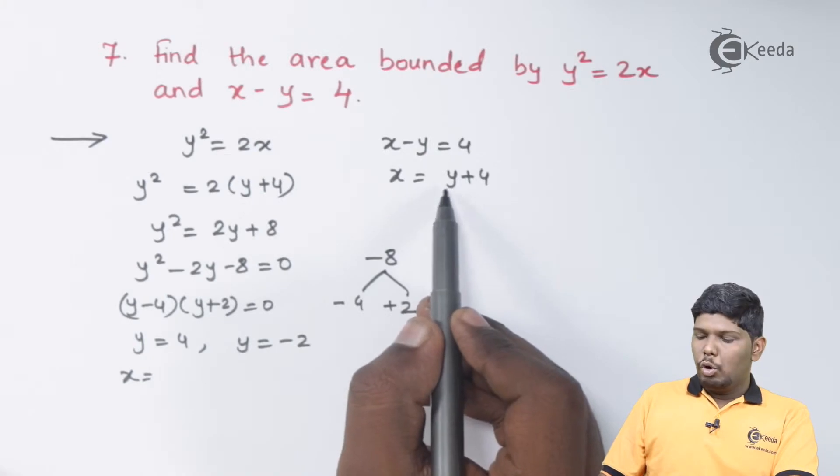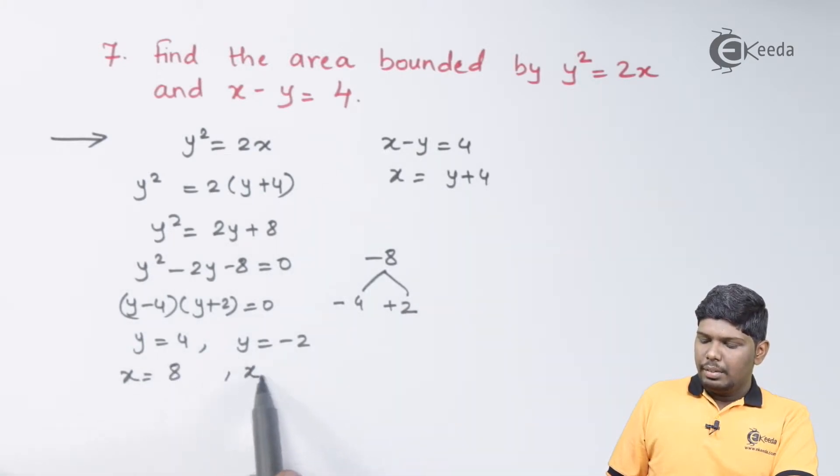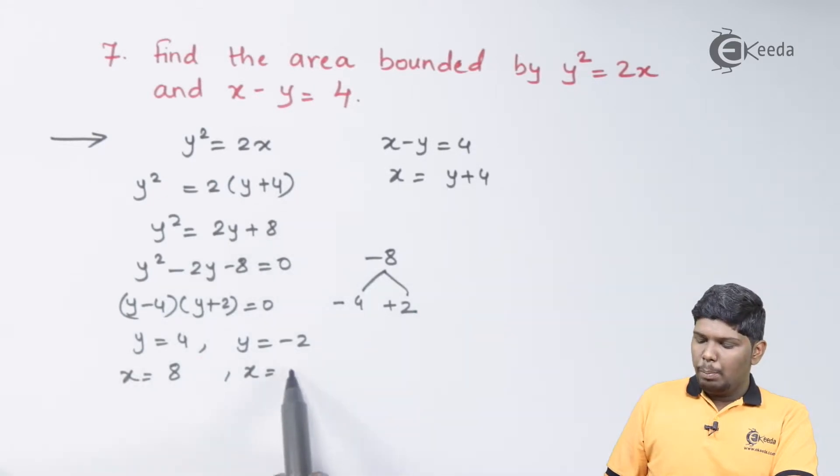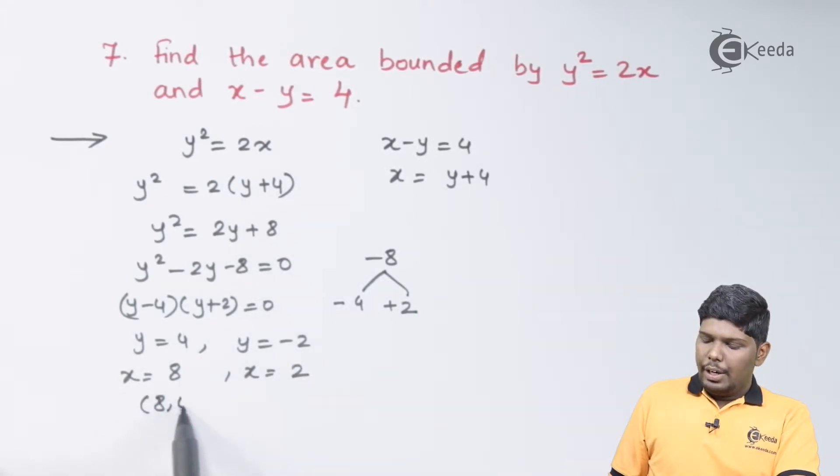Now let us find the values of x. So if I substitute y as 4, 4 + 4 will give you 8. And if I substitute y as -2, -2 + 4 will give you +2. So the two points are (8, 4) and (2, -2).